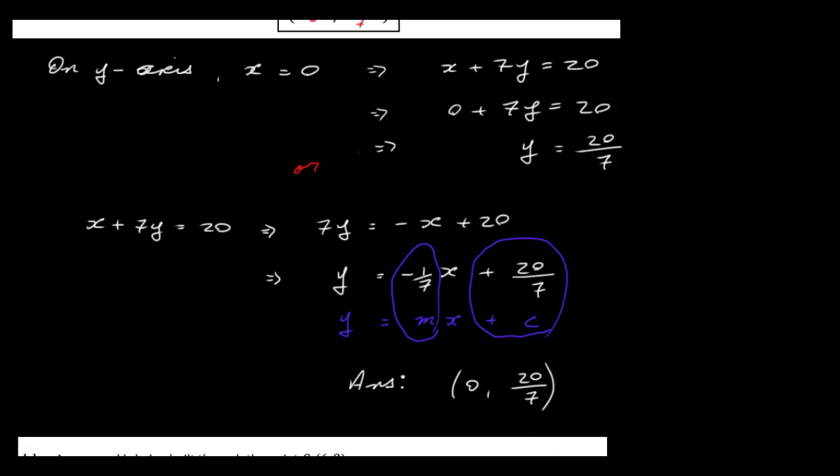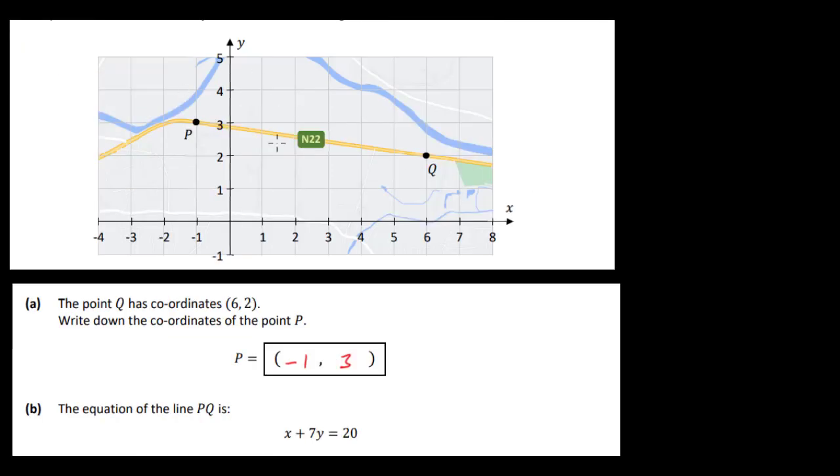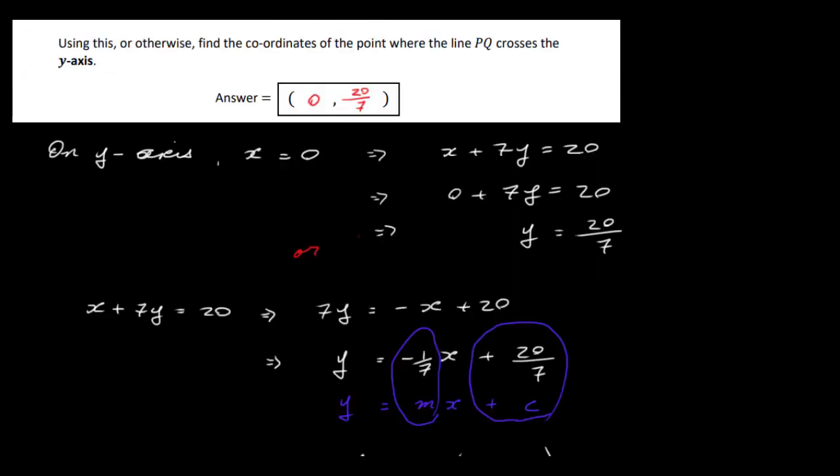The slope is minus 1 seventh and we can see here if we look at the line, the line is negatively sloped, sloping down here. It's sloping this way, which means it has a negative slope. This way would mean it would have a positive slope. So a couple of ways of doing that. That's part B. Let's have a look at part C then.